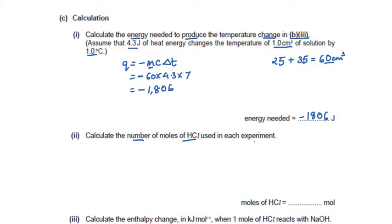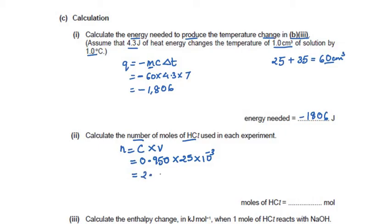The next equation is to calculate the number of moles of HCl used in each experiment. Using the formula: moles = concentration × volume. The concentration of HCl is 0.950 mol/dm³ and the volume is 25 cm³, which must be converted to dm³ by multiplying by 10⁻³. The answer is 2.38 × 10⁻² mol, given to three significant figures.